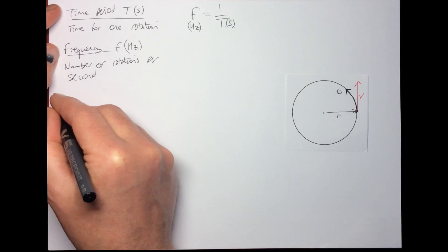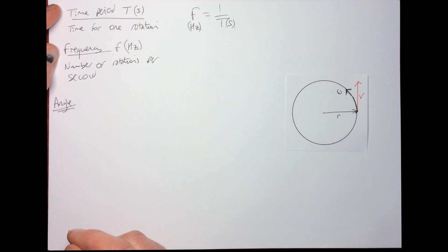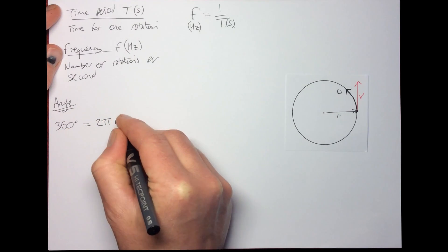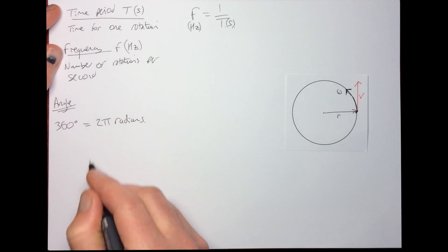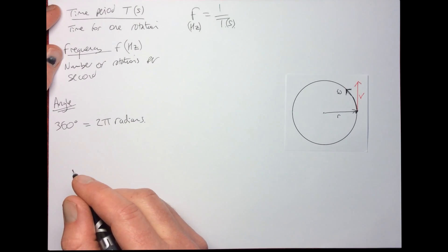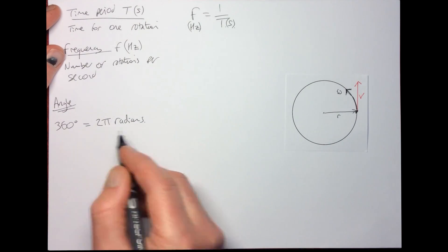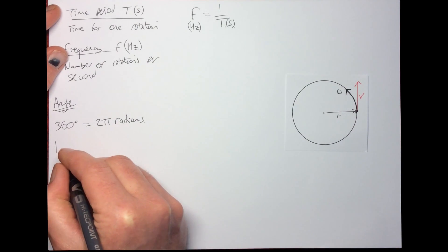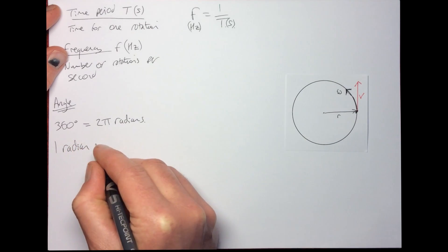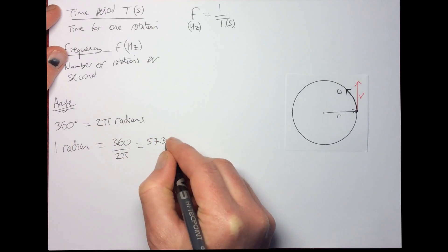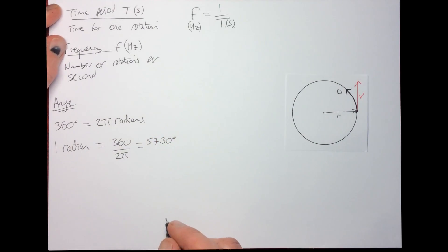With circular motion, we measure the angle through which the object moves in radians. 360 degrees is equal to 2π radians. Radians are usually measured as fractions of π - 360 degrees, one whole rotation, is 2π radians. That means one radian is equal to 360 degrees divided by 2π, which is 57.3 degrees.